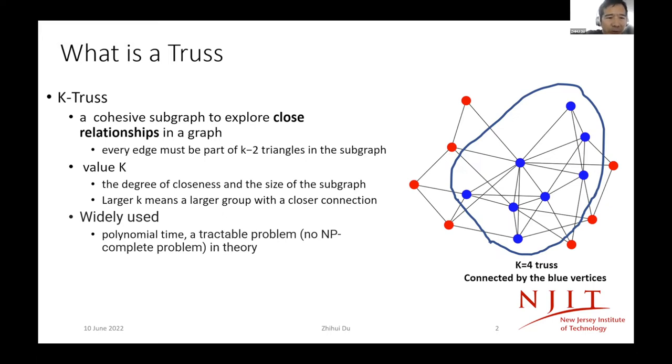Larger K means a larger subgraph, and the members in the subgraph have closer relationship or closer connections. Because the truss algorithm can be done in polynomial time compared with a clique, which is an NP-complete problem, the truss algorithm is much faster in theory. This is why it is widely accepted and used in practical graph and large graph analytics.